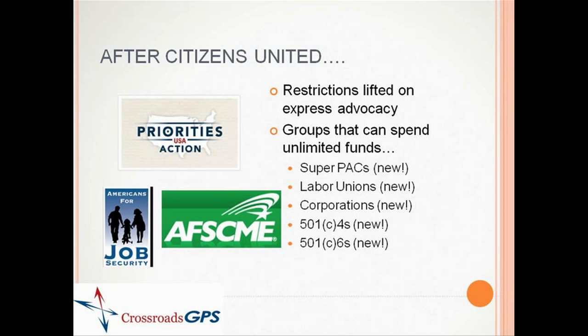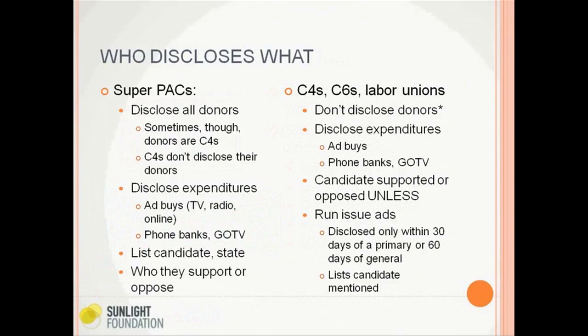Super PACs were actually created by a different ruling in a case called SpeechNow versus FEC. Labor unions and corporations can spend directly from their treasuries, though we haven't seen much of that so far. In terms of disclosure, super PACs actually disclose all of their donors — although sometimes donors are nonprofit groups that don't disclose their own donors. For example, a group called Committee for a Working America got $250,000 from a C4 called New Models in the 2010 election, and New Models didn't disclose its donors. So it's kind of dead-end disclosure.